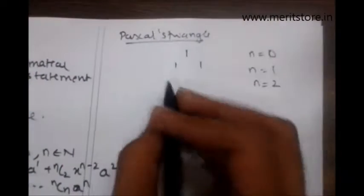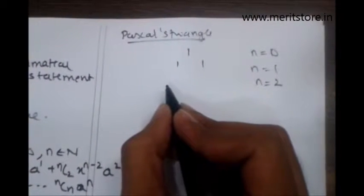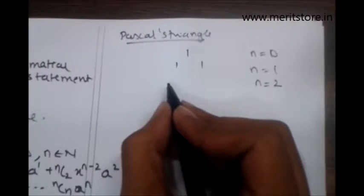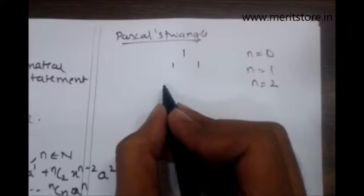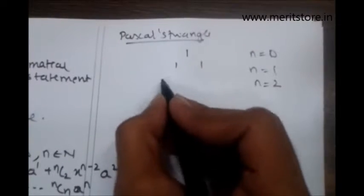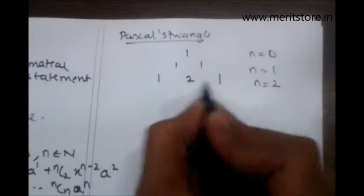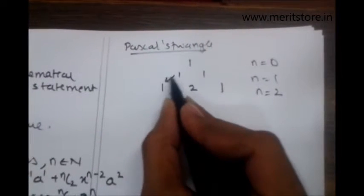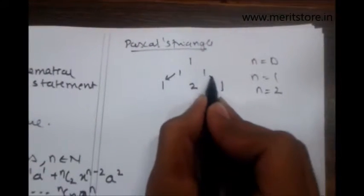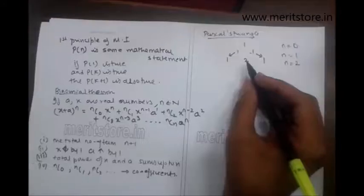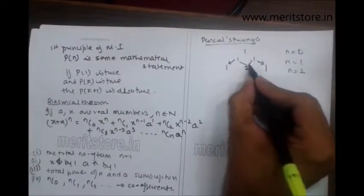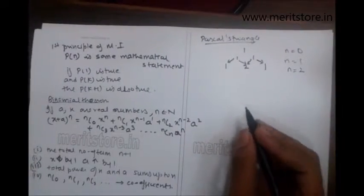For n equals 2, it is basically x plus a the whole square. If you know the formula x plus a the whole square, that is x square plus 2ax plus a square. The coefficients are 1, 2 and 1. How did I get this coefficient? Write the first number as it is towards the left. The sum of both the numbers is written in the center.